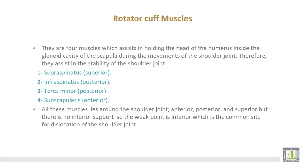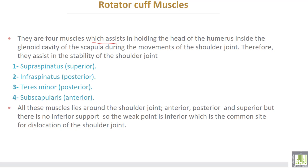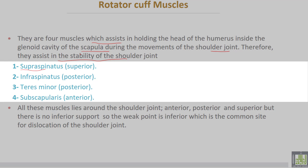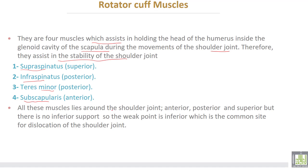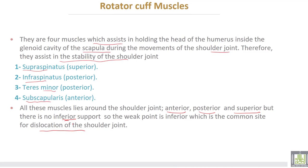The rotator cuff muscles are four muscles which assist in holding the head of the humerus inside the glenoid cavity of the scapula during movements of the shoulder joint, thereby assisting in the stability of the shoulder joint. They are: supraspinatus superiorly, infraspinatus posteriorly, teres minor posteriorly, and subscapularis anteriorly. These muscles lie around the shoulder joint anteriorly, posteriorly, and superiorly, but there is no inferior support. So the weak point is inferior, which is the common site for dislocation of the shoulder joint.